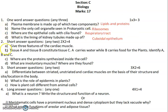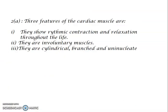Moving on to question 2, the short answer questions, each carrying two marks. Question 2a: give three features of cardiac muscles. This is from the chapter 'Tissues.'